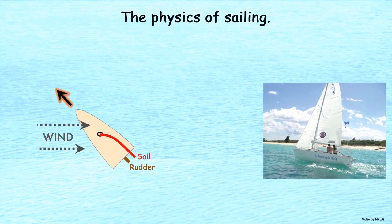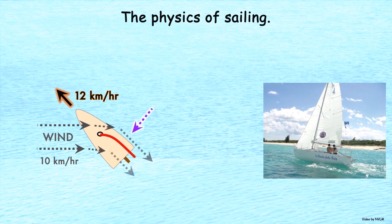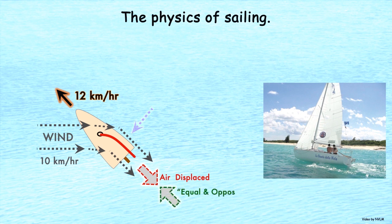The physics of sailing is straightforward. The air hitting the sail is already moving and is redirected toward the axis of travel. This creates an equal and opposite force and provides power to the boat.